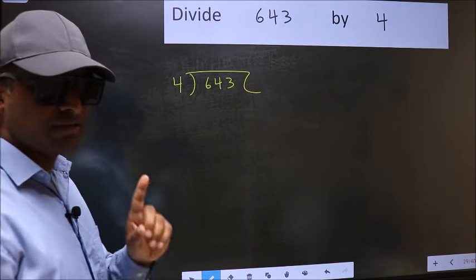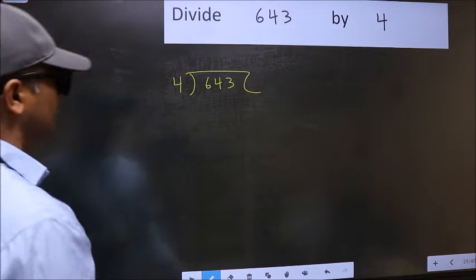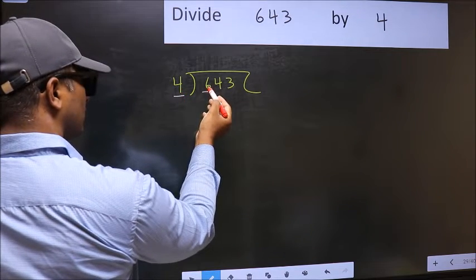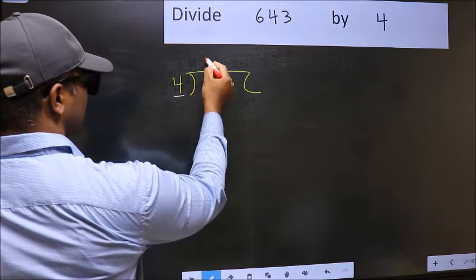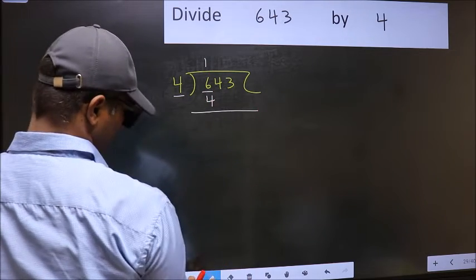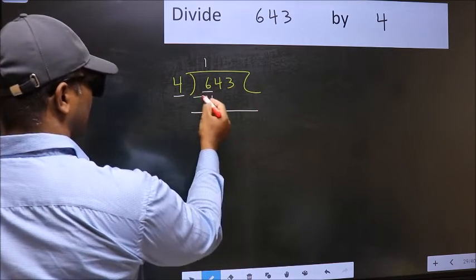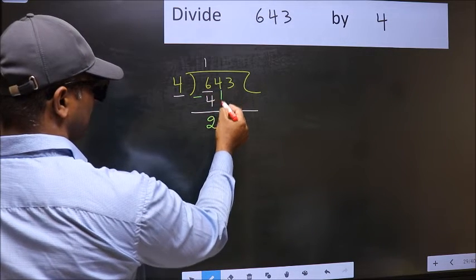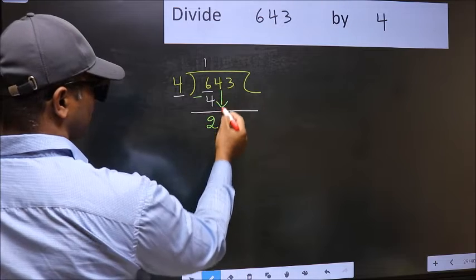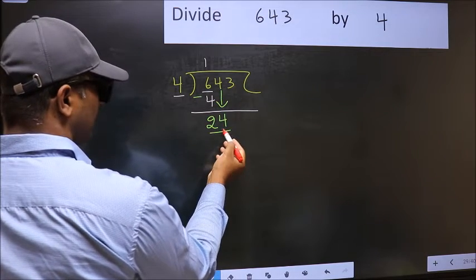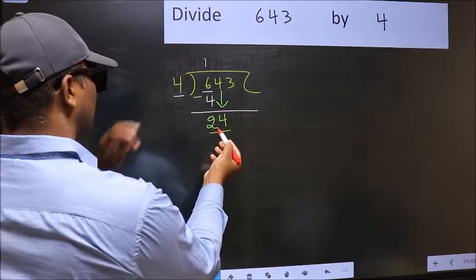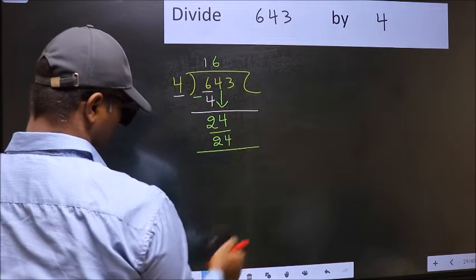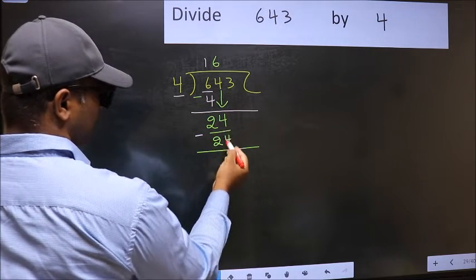This is your step 1. Next, here we have 6 and here 4. A number close to 6 in the 4 table is 4. Once 4, now you should subtract 6 minus 4 equals 2. After this, bring down the beside number, so 4 down. Now 24. When do we get 24 in the 4 table? 4 times 6 is 24. Now you should subtract 24 minus 24 equals 0.